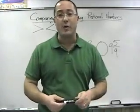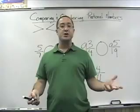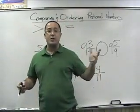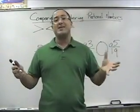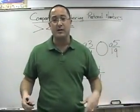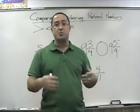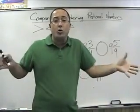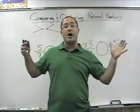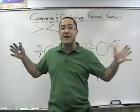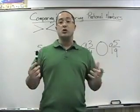So let's talk about comparing and ordering rational numbers. What are rational numbers? Rational numbers are any number that makes sense — fractions, decimals, percents, whole numbers, integers, repeating decimals — those are all rational numbers.